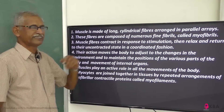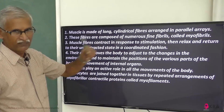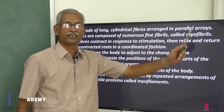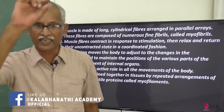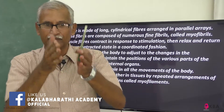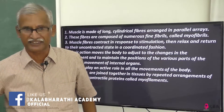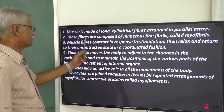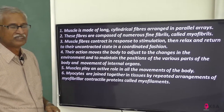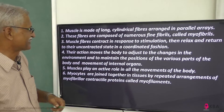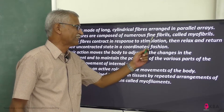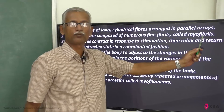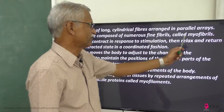Muscle is made up of long, neat, cylindrical fibers. Fibers are arranged in parallel rows. These fibers are composed of numerous fine fibrils, that is called myofibrils — muscle fibrils.